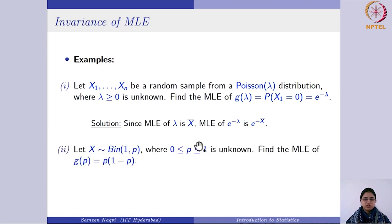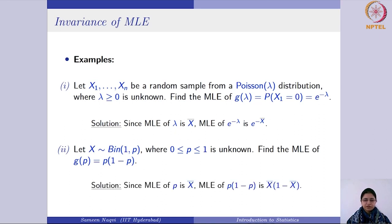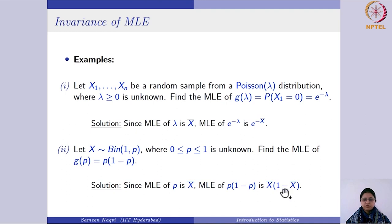For the Bernoulli distribution (Binomial with n=1 and parameter p), the MLE of p is x-bar. To find the MLE of the variance p*(1-p), we apply invariance: MLE of p*(1-p) is x-bar*(1-x-bar), where x-bar is the sample mean from the random sample x1, x2, ..., xn from the Bernoulli distribution.